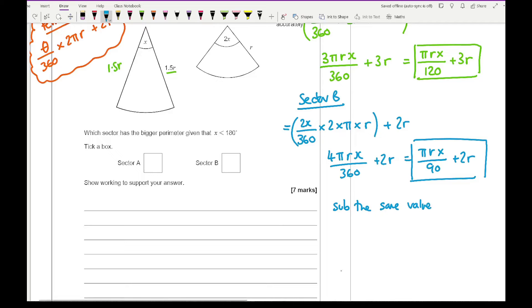What you could do is pick a value of x (remember that x has got to be less than 180), pick a value of r, and then sub into each box and see which one is bigger, because r is the same in both equations and so is x. Regardless of what they are, it will give you a ratio. It won't give you the exact perimeter but it will definitely give you some comparison about which one's bigger and which one's not.